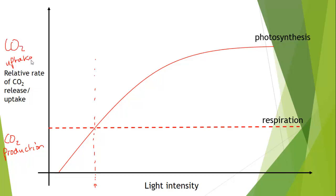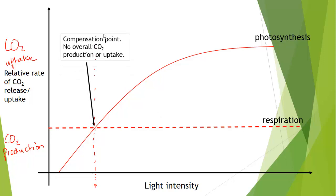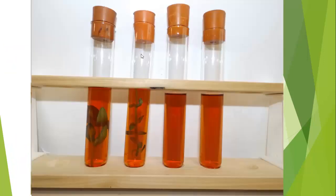The point where the two lines cross we call the compensation point — there is no overall CO₂ production or uptake. Respiration is balancing photosynthesis. It's balancing in terms of O₂ production and uptake — respiration is using O₂ at the same rate as photosynthesis is producing O₂. Likewise, the sugars involved: respiration is using glucose at the same rate as photosynthesis is making it.